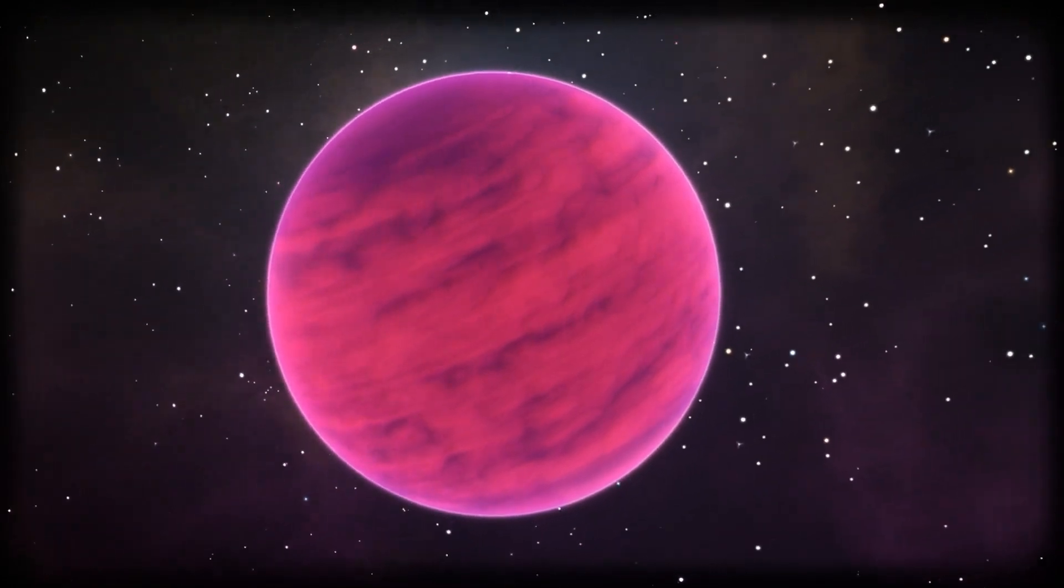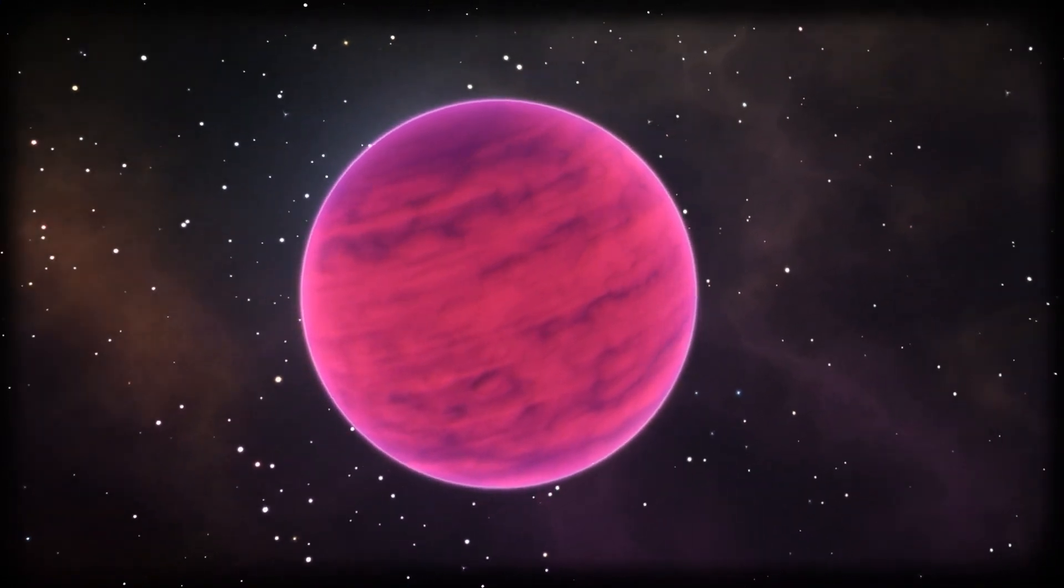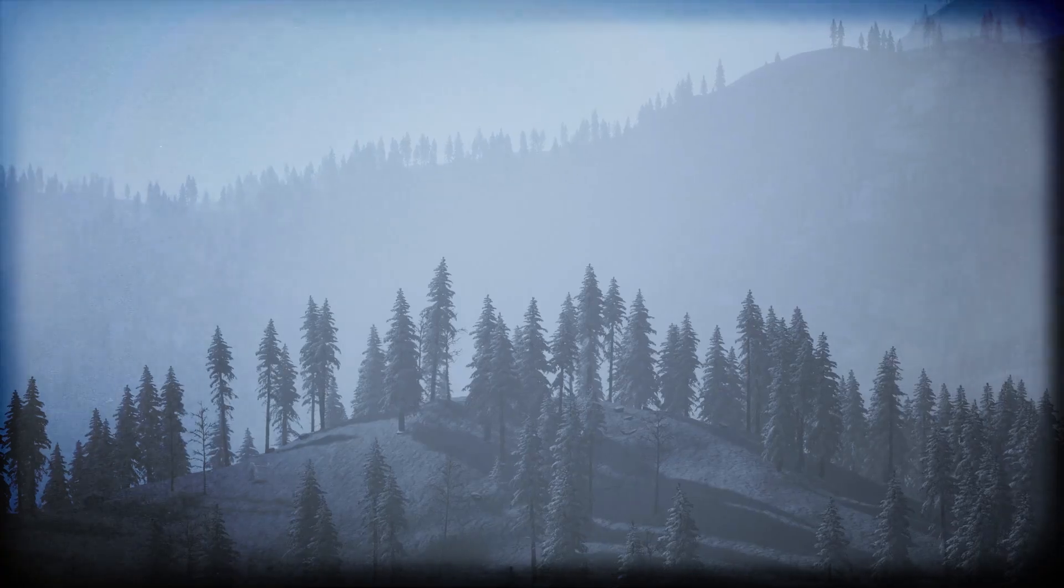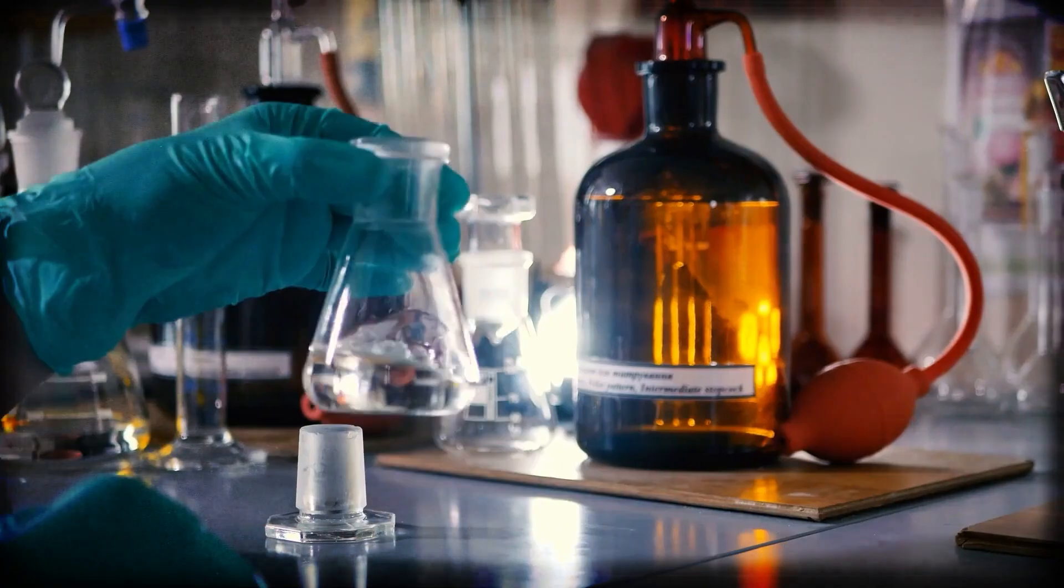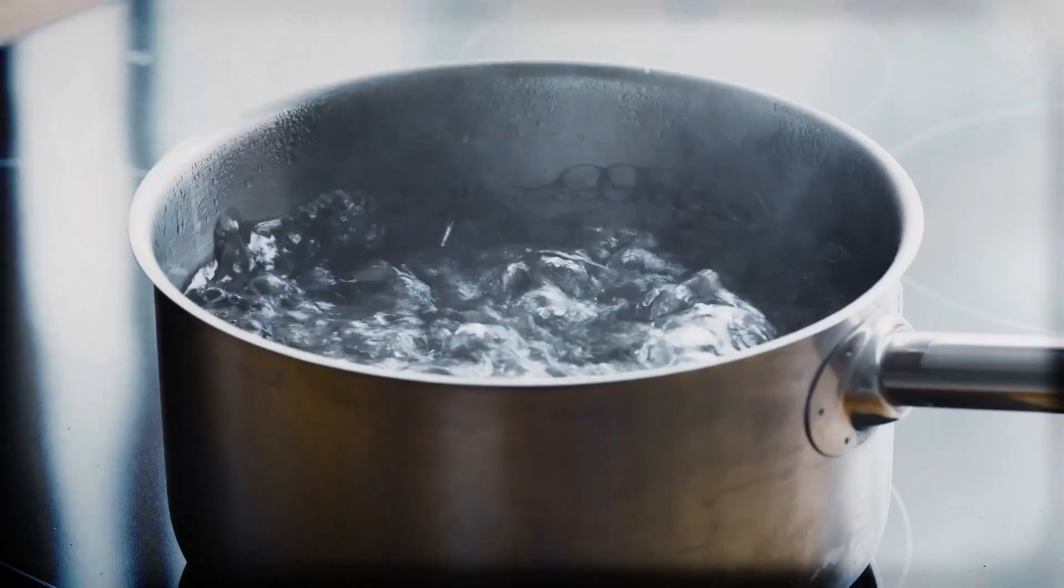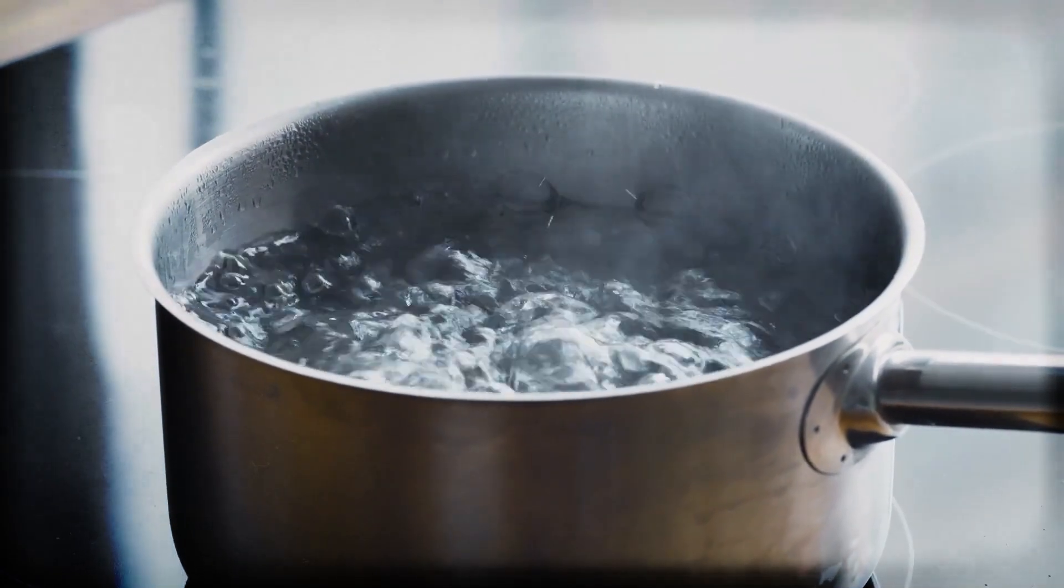Others might look Earth-sized but are more like mini-Neptunes, wrapped in thick hydrogen blankets that smother any chance of a cozy, breathable atmosphere. If that hydrogen layer is too thick, it can trap so much pressure and heat below that any potential water would be boiling or crushed, far from life-friendly.